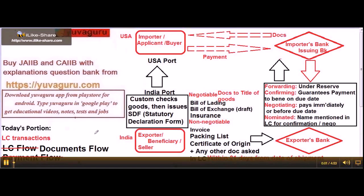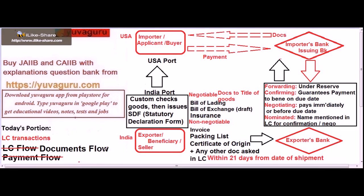Let's study the LC transactions document flow. In an earlier video, I showed the LC flow. By now the exporter has received the LC from the importer's bank. LC means it gives a guarantee from the issuing bank to the exporter — if the specified documents are received by the bank, they will pay the exporter irrespective of whether the applicant or buyer pays them or not.